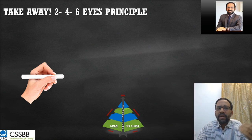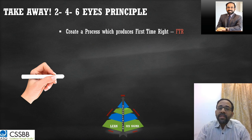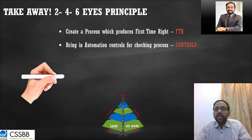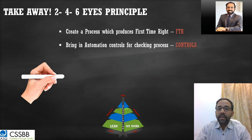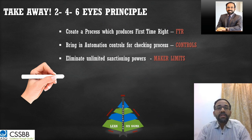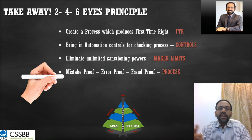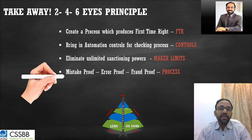Some suggestions: first, create a process that produces first time right — that is the level we have to move to. Second, bring in automation controls. Robotic process automation is probably the way out. Third, eliminate unlimited sanctioning powers for maker and checker — this will prevent financial fraud and erroneous transactions. Fourth, mistake-proof, error-proof, fool-proof, and now fraudulent-proof — because if fraud is to happen, the process design currently offers that potential.